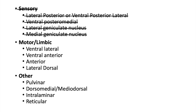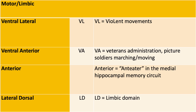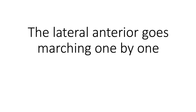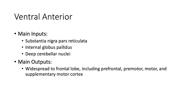Now let's move on to the thalamic nuclei with motor functions. The ventral lateral and ventral anterior thalamic nuclei both have to do with motor functions. VL reminds me of violent — like punching, kicking, and motor movements. VA stands for Veterans Administration, which reminds me of soldiers marching. Both have the same inputs: the substantia nigra pars reticulata, internal globus pallidus, and deep cerebellar nuclei. The main outputs for the ventral lateral are the motor, premotor, and supplementary motor cortex. The ventral anterior has widespread outputs to the frontal lobe, including the prefrontal, premotor, motor, and supplementary motor cortex.